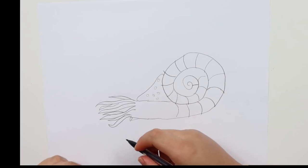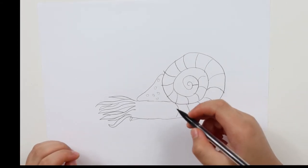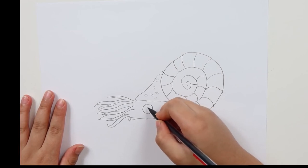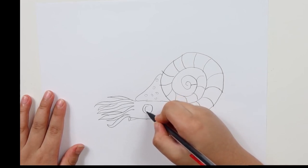The Ammonite uses a siphon to jet away when it's in danger. Then you can draw the eye. Draw like this, and you can draw like this.